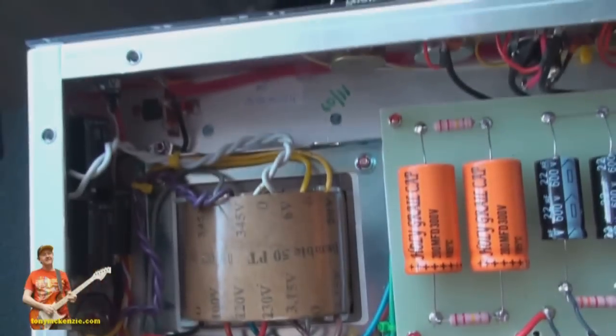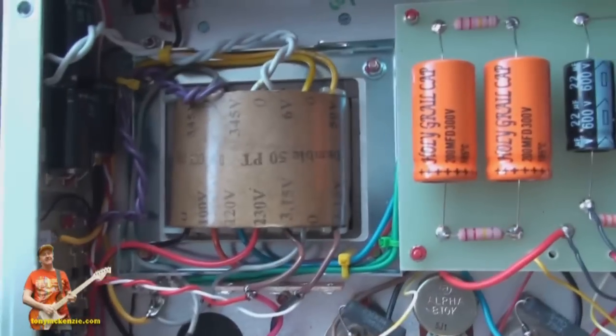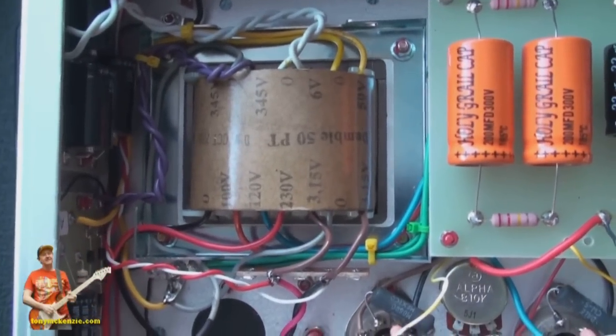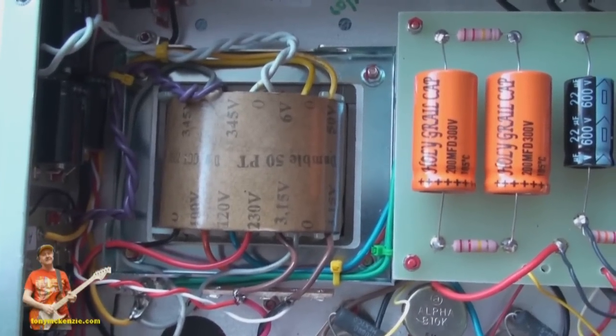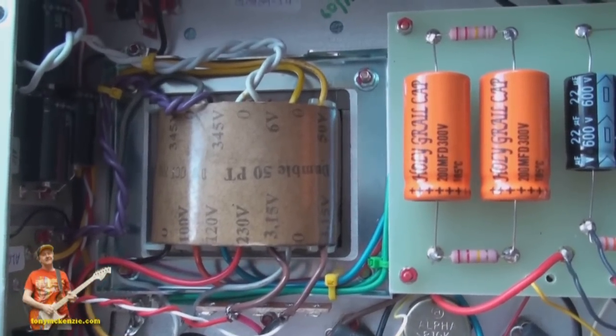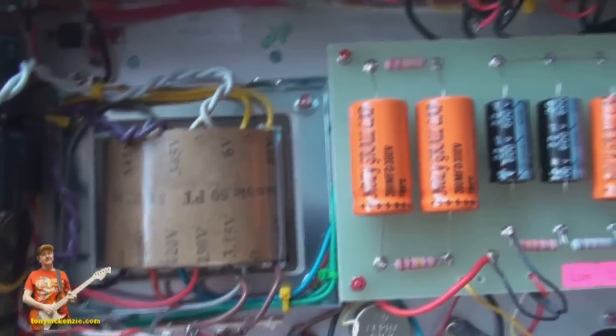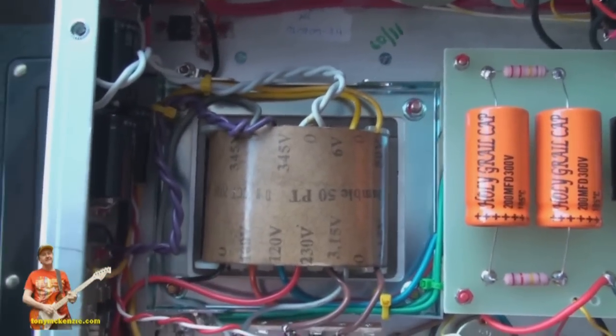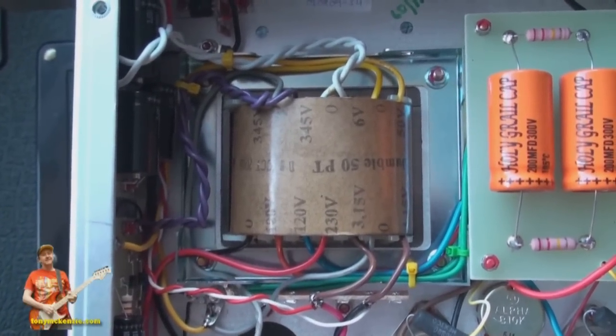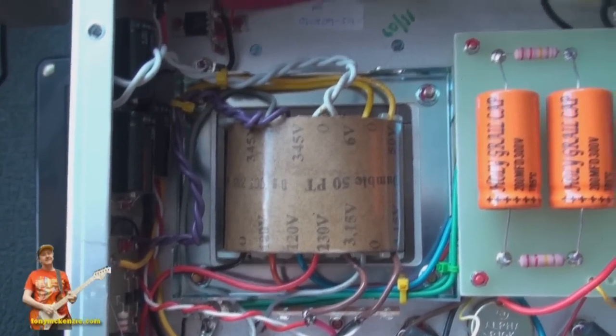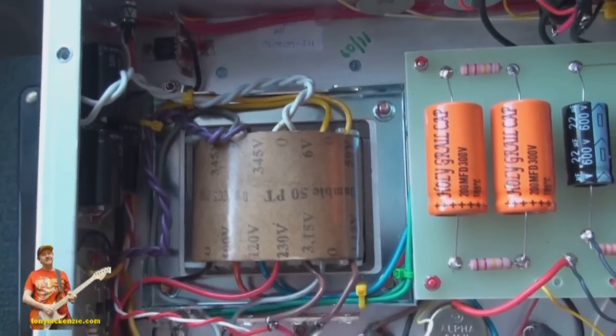This one's set up by the way for 240 volts. I know it's 230 on the thing, that's all they've got. There's no 240 volt option. Another thing I found, there's no actual ground pin on this power transformer. It says in the schematic that there is, but actually there isn't. Again it's another anomaly that can just drive you crazy.